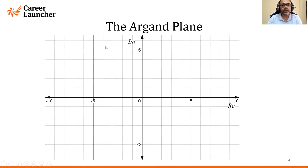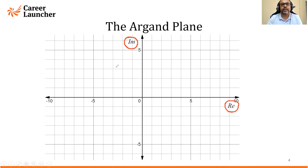This is typically how an Argand plane looks. You can see it is no different from your normal xy Cartesian coordinate system — there is an x-axis and a y-axis. However, these are not called x and y-axis. The x-axis is called the real axis, where you have real numbers, and the y-axis is called the imaginary axis, where you have the imaginary parts.